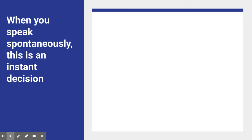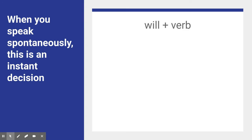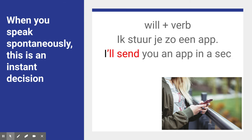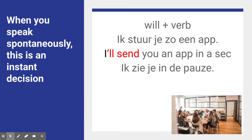Now, when you immediately think of something — you make a plan and say it — that's what I mean when you speak spontaneously; you make an instant decision. Then you use 'will' plus verb. For example, 'I'll send you an app'. You can't say 'I sent you an app'; you have to say 'I will send you an app', or shortened: 'I'll send you an app'. Or 'ik zie je in de pauze' — in English you say 'I'll see you in break', or written in full: 'I will see you in break'.